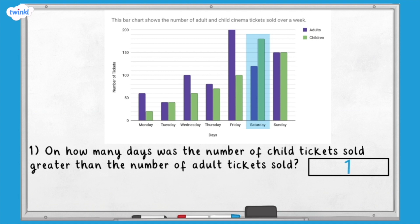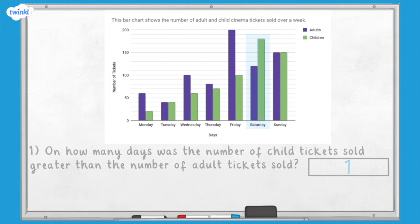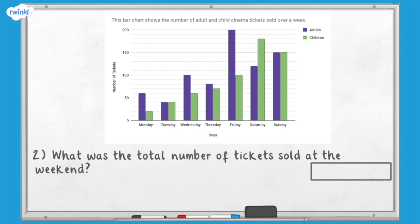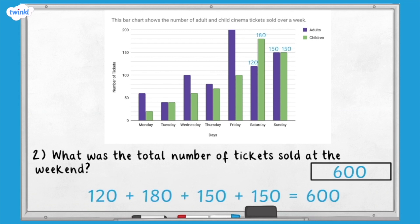For question two, you needed to find the total tickets sold for Saturday and Sunday. The answer was 600.